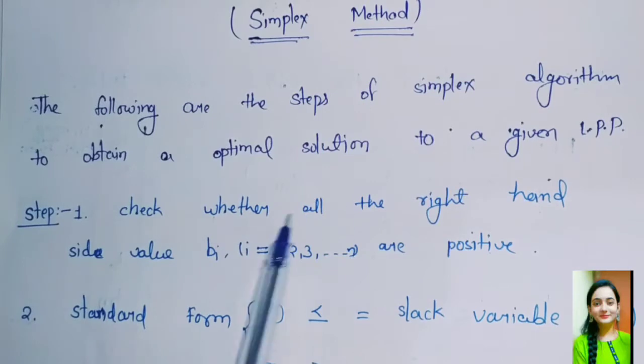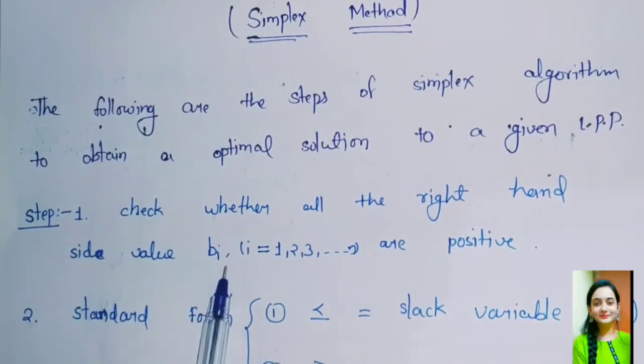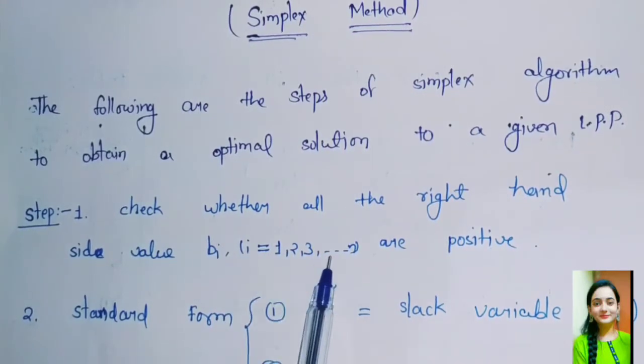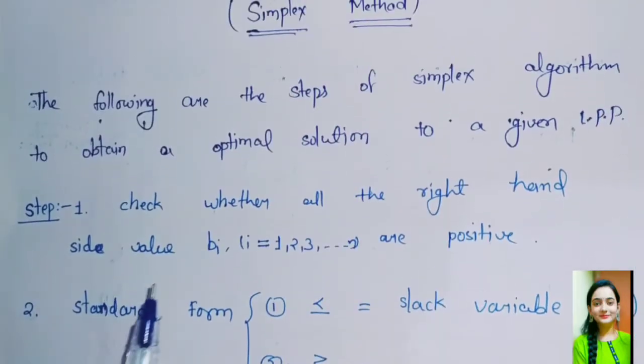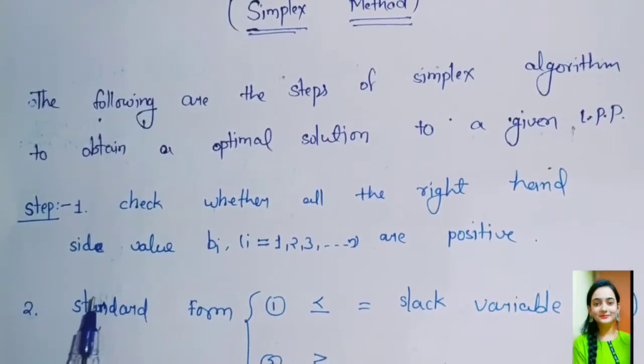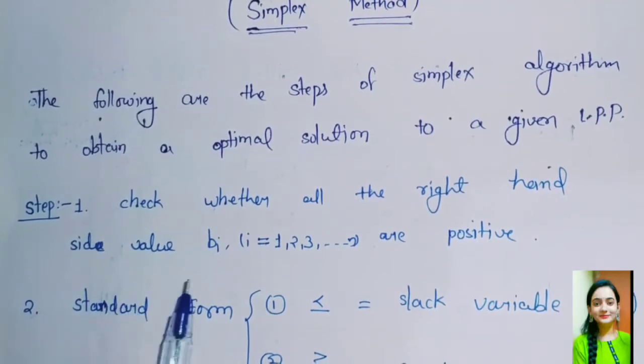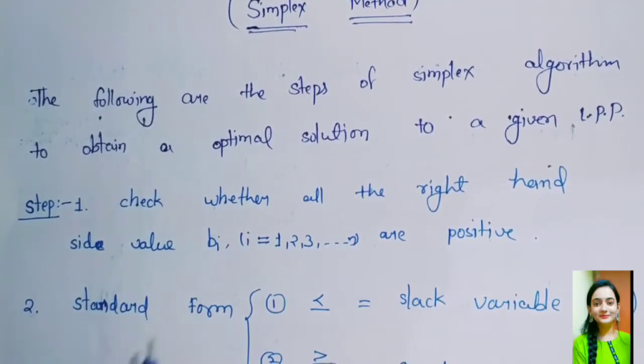Step 1: Check whether all the right-hand side values bi, where i = 1, 2, 3, up to n, are positive. If not, multiply both sides of that constraint by minus 1 so as to make its right-hand side positive.